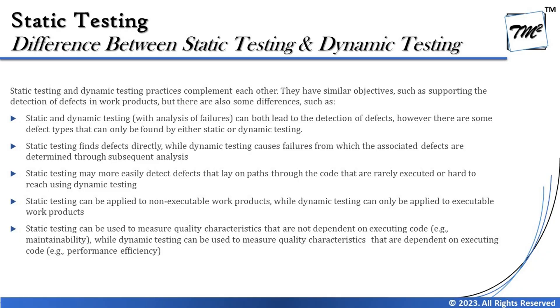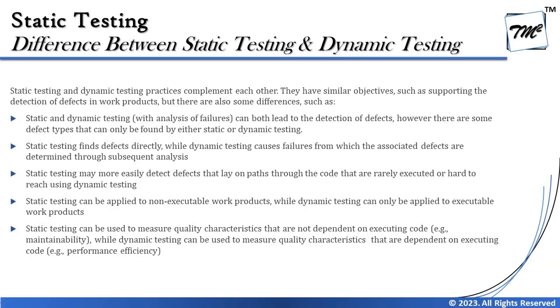Another key difference: static testing finds defects directly, while dynamic testing causes failures from associated defects that are determined through subsequent analysis. If I'm reading a work product I can directly find the defect right in the documentation. In dynamic testing, I see a failure; from that failure I identify a defect; the defect goes through root cause analysis (RCA), which determines the main reason behind the failure. This takes a longer path than static testing.